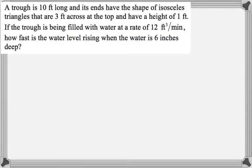So, we have a trough that is 10 feet long, and its ends have the shape of isosceles triangles that are 3 feet across at the top and have a height of 1 foot. If the trough is being filled with water at a rate of 12 cubic feet per minute, how fast is the water level rising when the water is 6 inches deep?